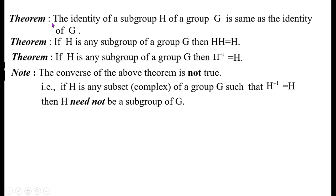Some results — we call them theorems. The identity of a subgroup H of a group G is the same as the identity of G. If H is any subgroup of a group G, then H·H = H. If H is any subgroup of a group G, then H⁻¹ = H.